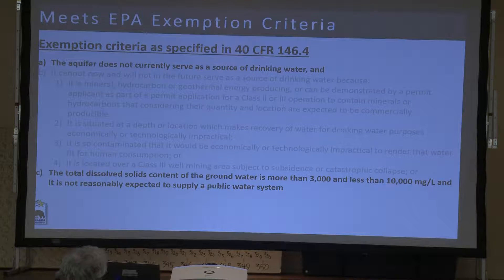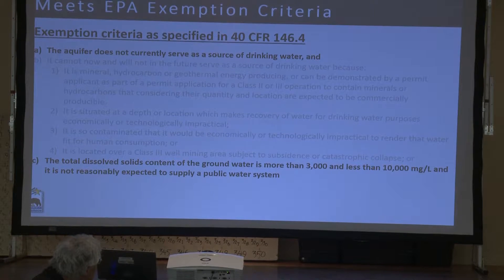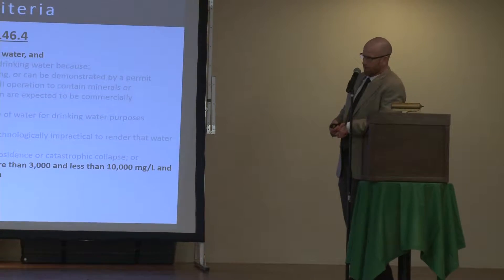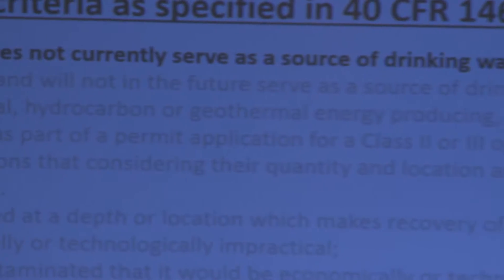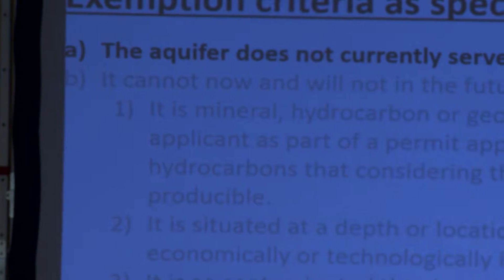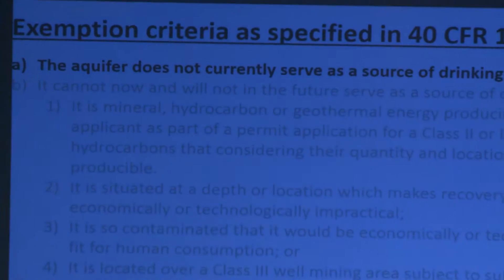The federal government has established criteria before they'll grant an aquifer exemption. The first is that the aquifer does not currently serve as a source of drinking water. The other applicable criteria in this case is criterion C: the total dissolved solids content of the groundwater is more than 3,000 and less than 10,000 milligrams per liter, and it is not expected to supply a public water system.